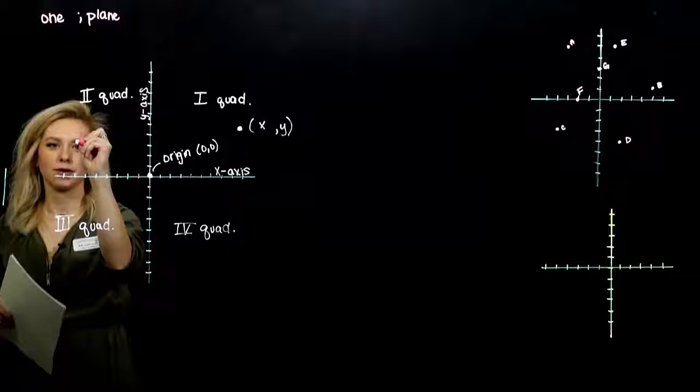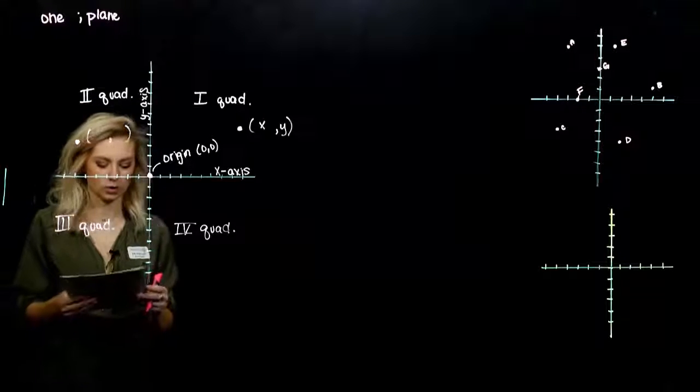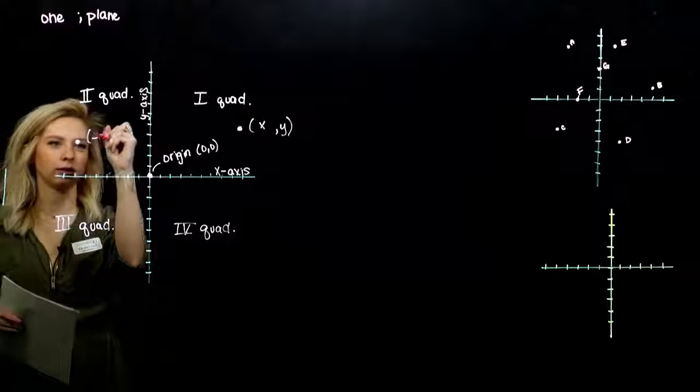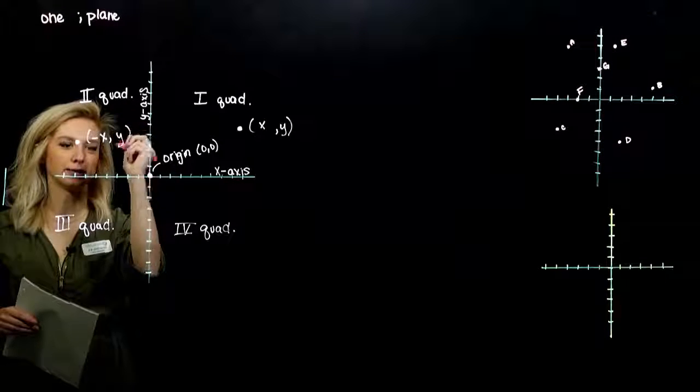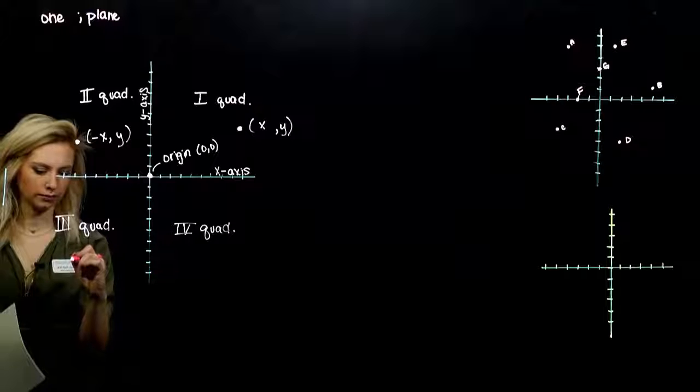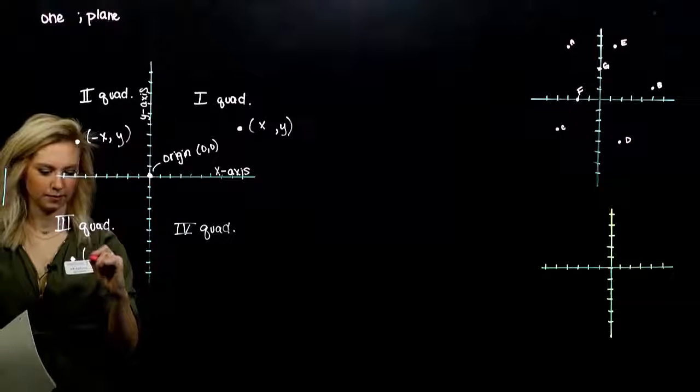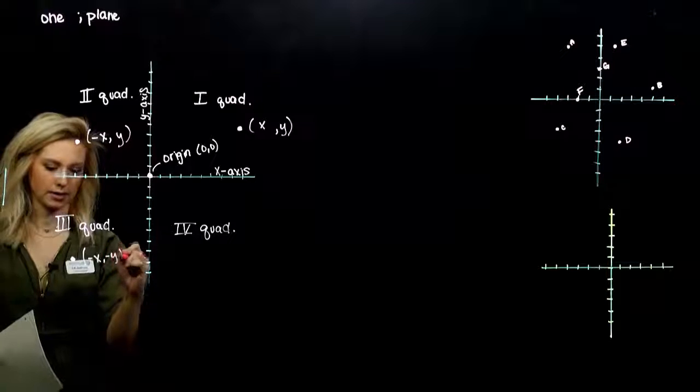Any point over here is going to have what kind of x and y coordinates. X is now negative, but y is still positive. Point in the third quadrant, now we're talking negative and negative. Minus x, minus y.